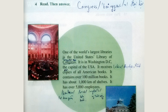Four: read then answer, page 52. One of the world's largest libraries is the United States Library of Congress. It is in Washington DC, the capital of the USA. It receives copies of all American books. It contains over one hundred million books. It has about one thousand kilometers of shelves. It has over five thousand employees.